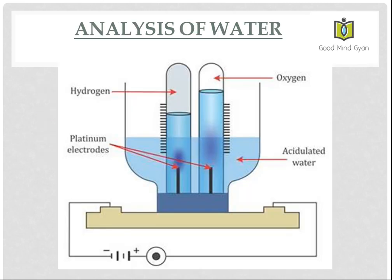So let us see the analysis of water. Water is a compound. It is made up of two elements, hydrogen and oxygen. So here we are going to see how we can break down water into hydrogen and oxygen.